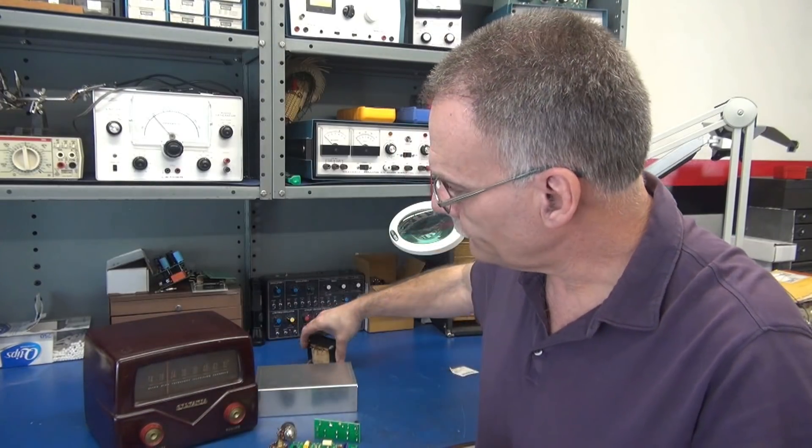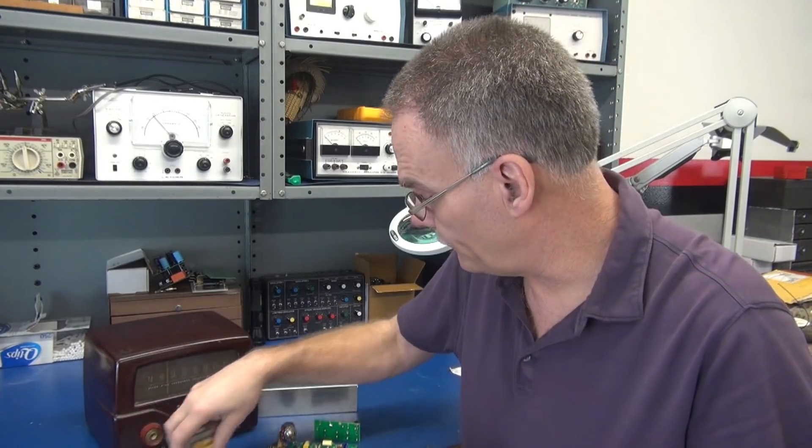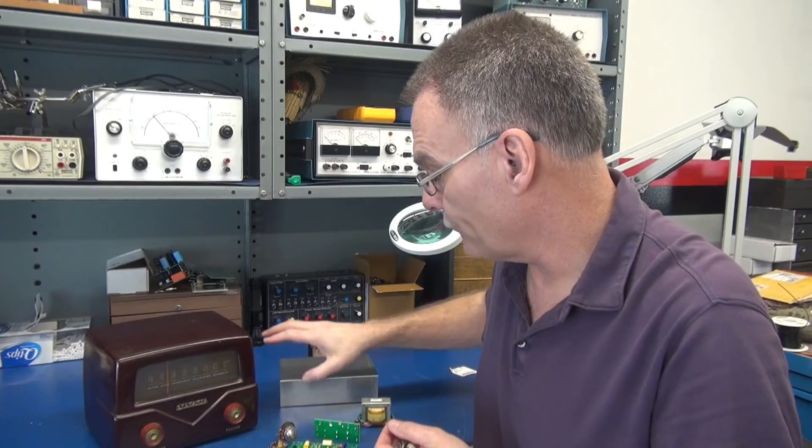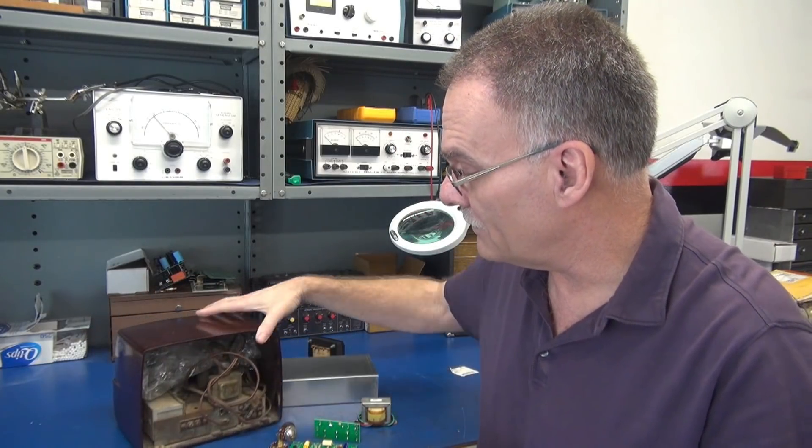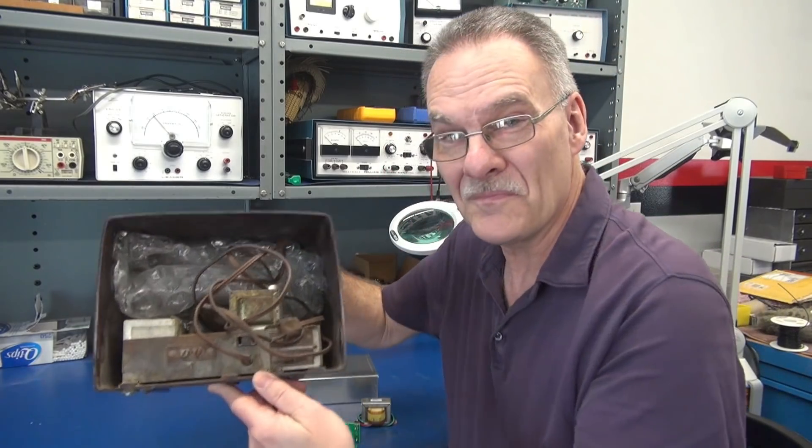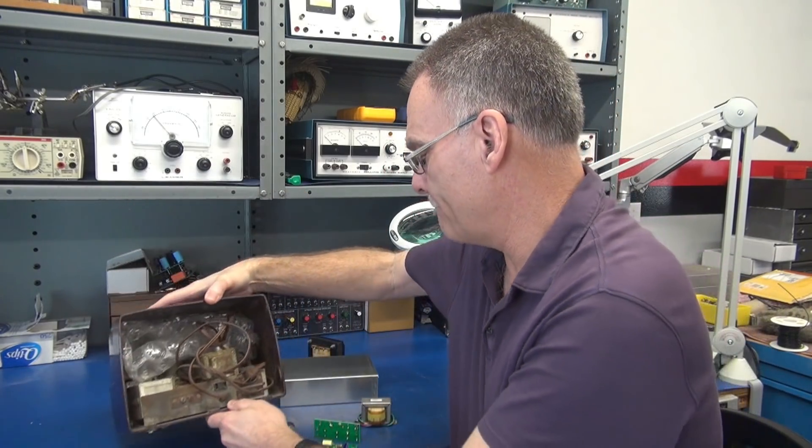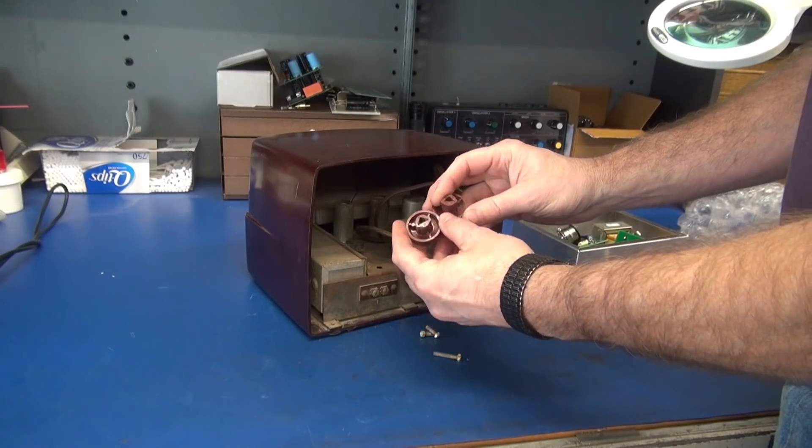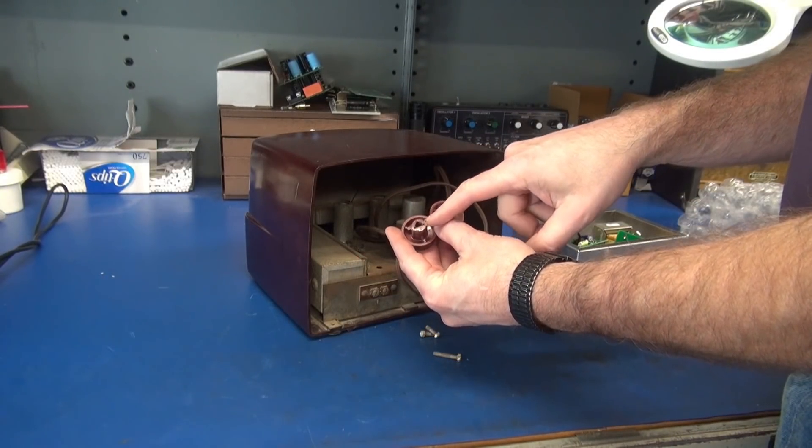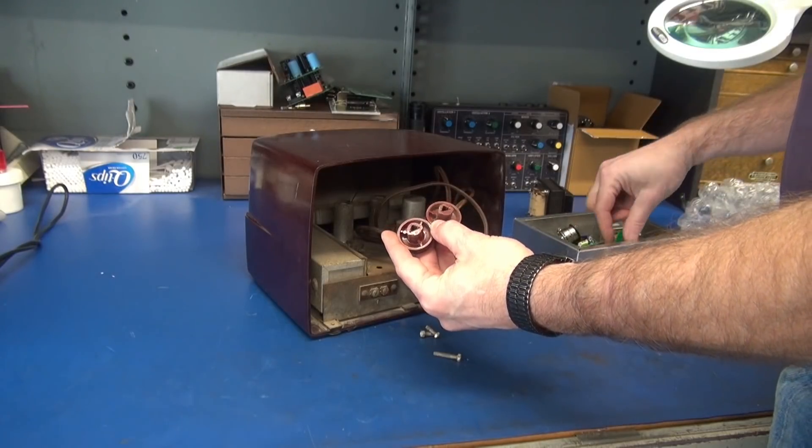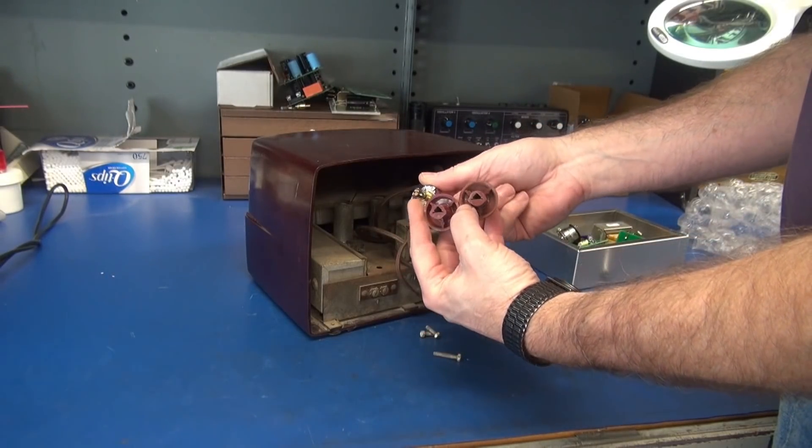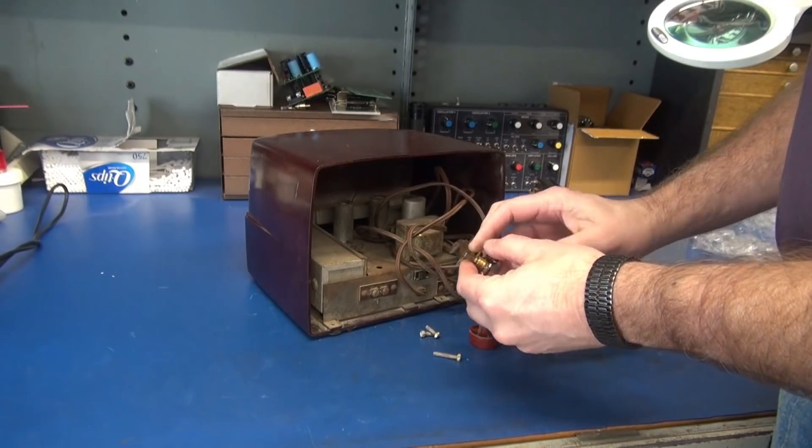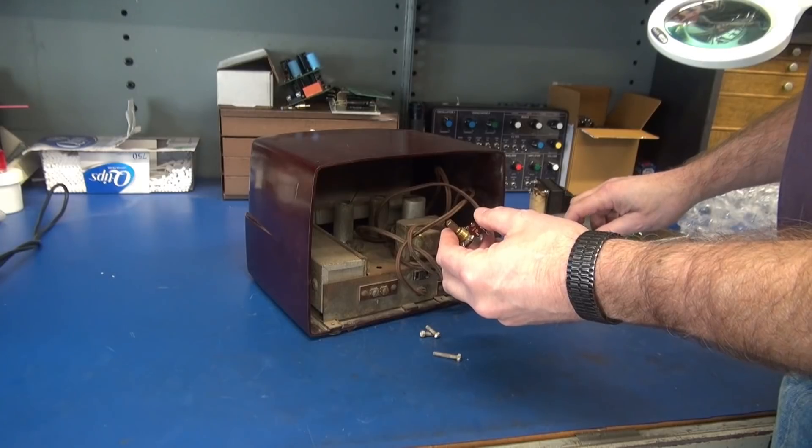The first thing I need to do is gut this guy out. We're going to try to reuse the glass and possibly the knobs. There's three screws that hold the chassis in. I pop the knobs off, and unfortunately these are D-shaft knobs and the pots I'm going to use have spline shafts, so we won't be able to use these knobs.